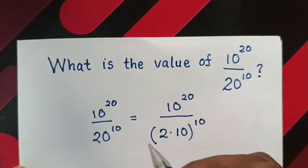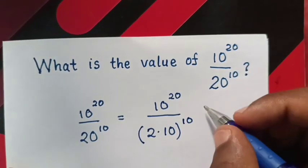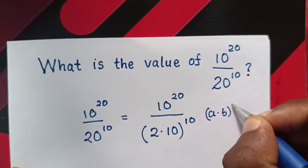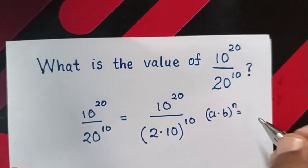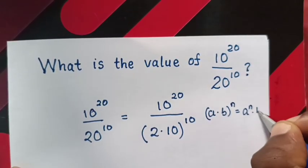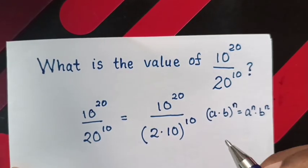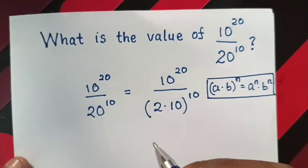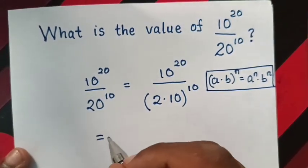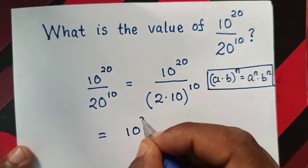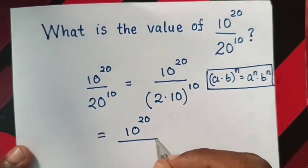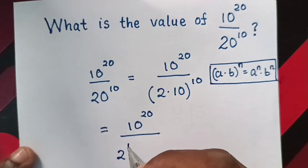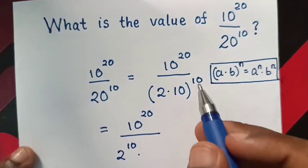In the denominator we will apply exponential rule that a times b bracket power n is equal to a power n times b power n. So this will be equal to 10 power 20 over multiplication of exponents with same power, 2 power 10 times 10 power 10.